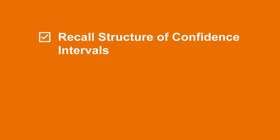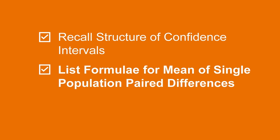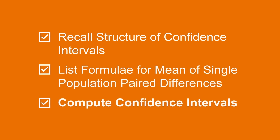We will start by briefly reviewing the general structure of confidence intervals. We will then specify the confidence interval expressions for the case of the mean of single population paired differences. Finally, we will practice with an example of the confidence interval problem.